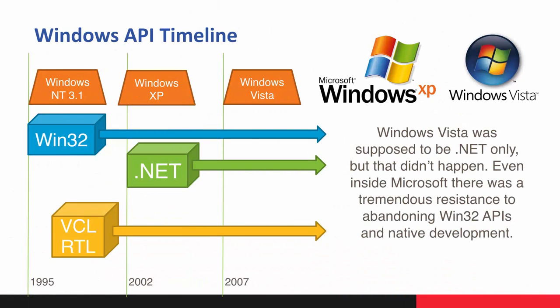Fast forward to Windows XP and Windows Vista. During XP's time frame, .NET was introduced. Microsoft said that in the future, .NET would be the only platform API you'd use, and Windows Vista was supposed to be .NET only. But that didn't happen. Even inside Microsoft there was strong resistance to abandoning native development and the Win32 API. Windows Vista included .NET out of the box, and so did later versions, but .NET never saw huge uptake on the desktop.